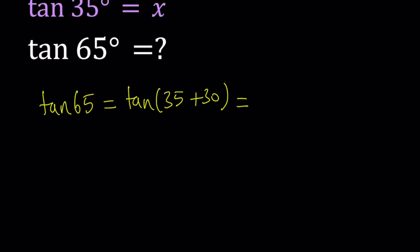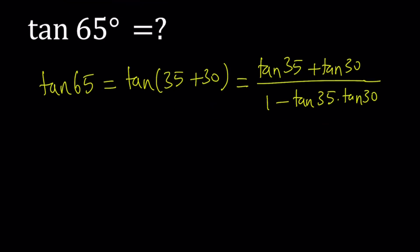So, and this just becomes tangent 35 degrees plus tangent 30 divided by 1 minus, using the sum formula for tangent. This kind of looks like too easy, too obvious, right? But let's go ahead and work it out.